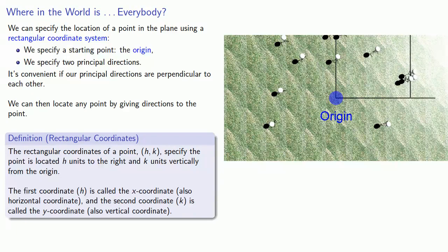We'll formalize this with the notion of rectangular coordinates. The rectangular coordinates of a point (h, k) specify that the point is located h units to the right and k units vertically from the origin. The first coordinate, h, is called the x-coordinate, also known as the horizontal coordinate, and the second coordinate, k, is called the y-coordinate, also the vertical coordinate. And because the order matters, the first coordinate is the horizontal distance and the second is the vertical distance, we call this an ordered pair.